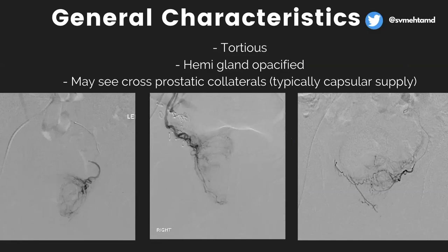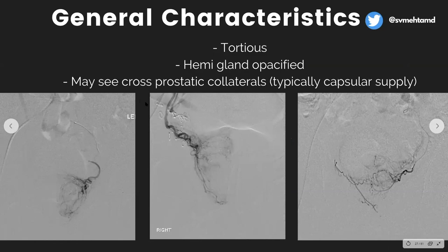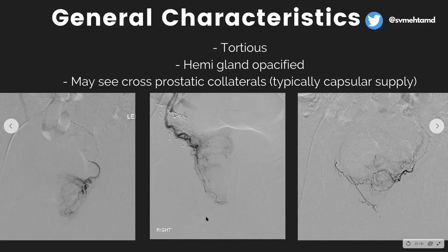Once you get to the actual prostate artery, it's typically tortuous because the gland is hypertrophied and stretched. Usually you'll get the hemigland opacified — half of it opacified nicely — which is very indicative that you're in the prostate. You may see cross-pelvic collaterals, typically the capsular supply, going over to the other side. These are helpful indicators that you're in the prostate. In larger prostates it's pretty obvious, but ingrain this in your head: a tortuous artery with many squiggles and a nice parenchymal blush — that's what you're looking for.